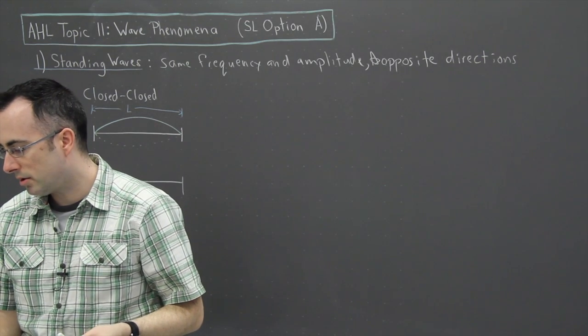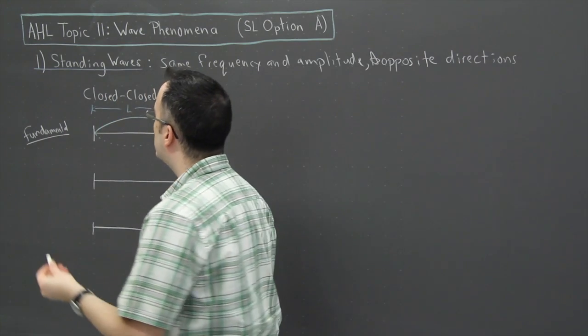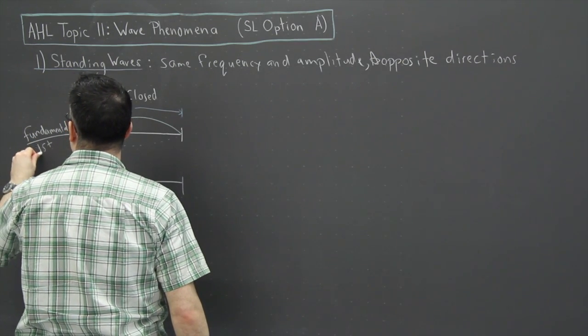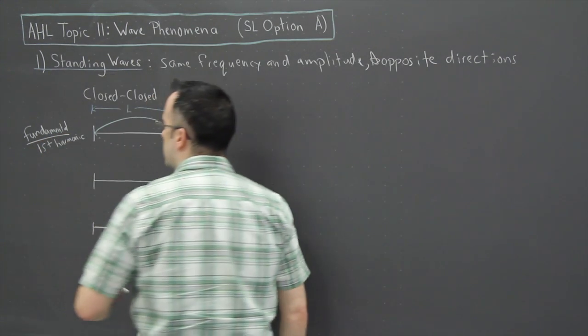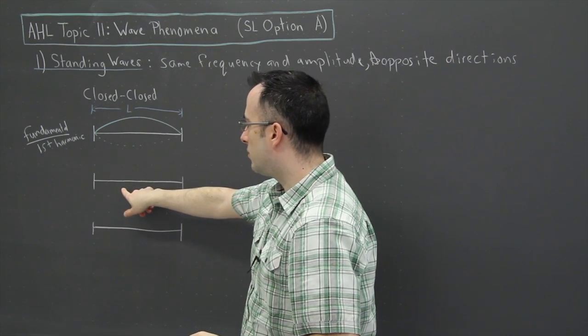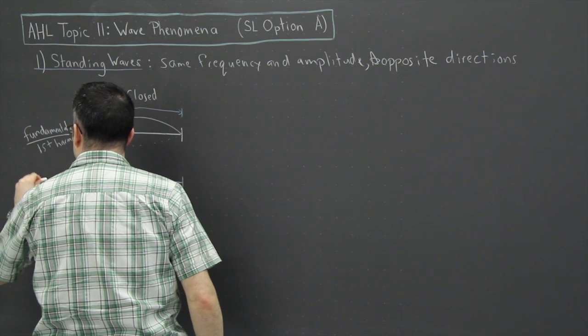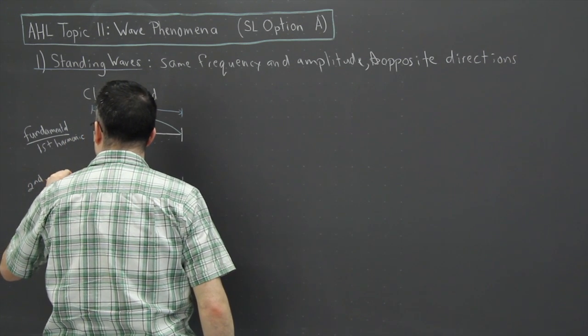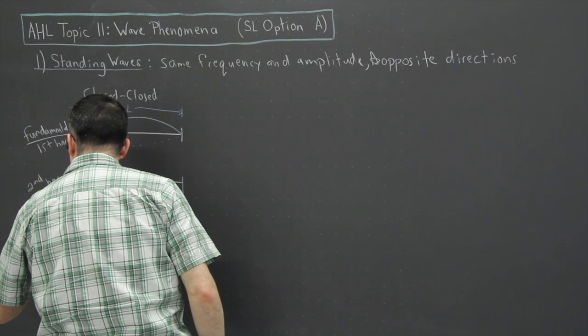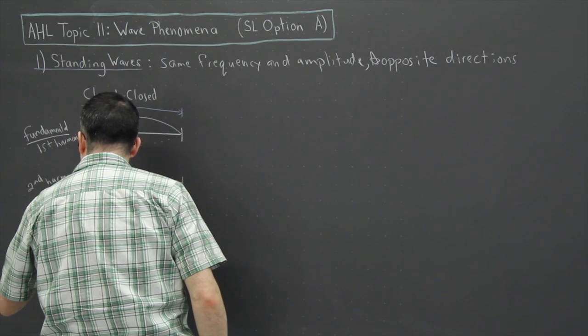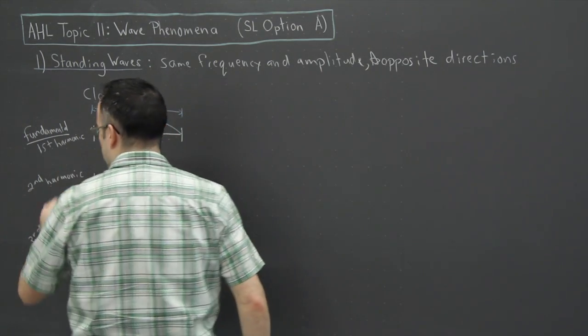And some people also call this the first harmonic. That's a common word that we use. First harmonic. Now this next one, we can call this the second harmonic. It turns out this is another standing wave possible here. And it turns out there's a third harmonic and there's any amount that you feel like adding. So there's a first, second, third, fourth, fifth, sixth, whatever you want.